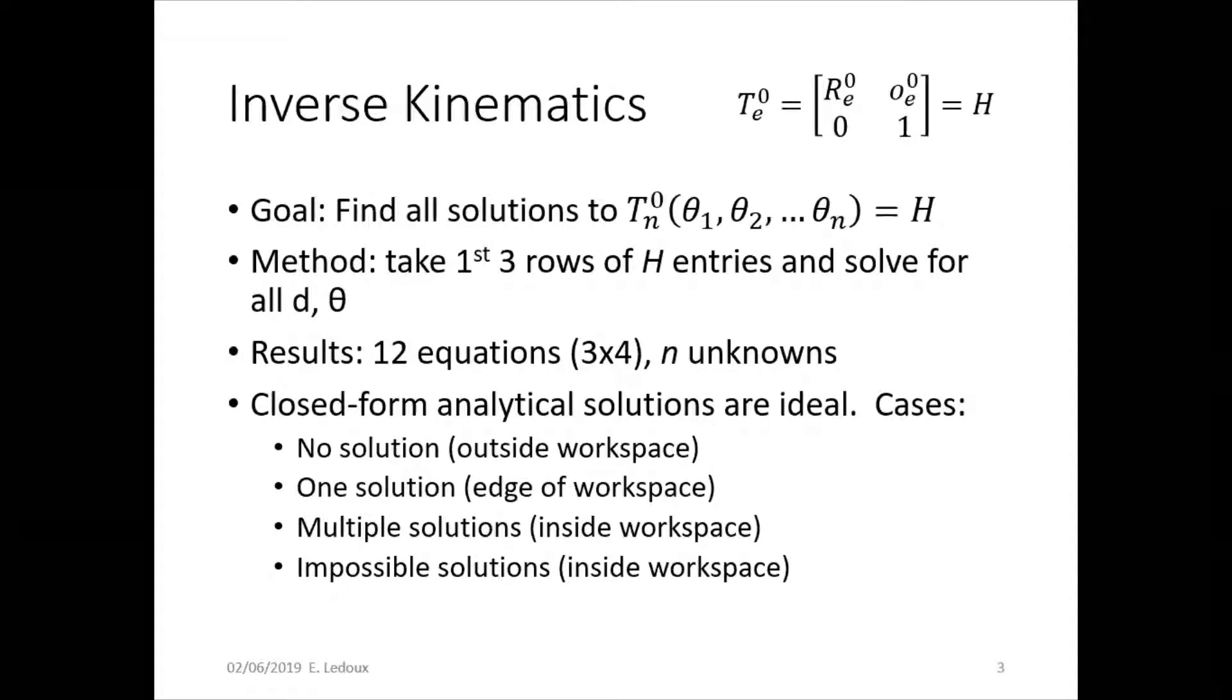The goal of inverse kinematics is find all solutions to the final transformation. So whatever theta 1, theta 2, theta 3, all the way to theta n, however many joints there are, equals the final homogeneous transformation matrix. The method is to take the first three rows, the ones that have the orientation and the position, and solve for all the d and theta that make the answer correct.